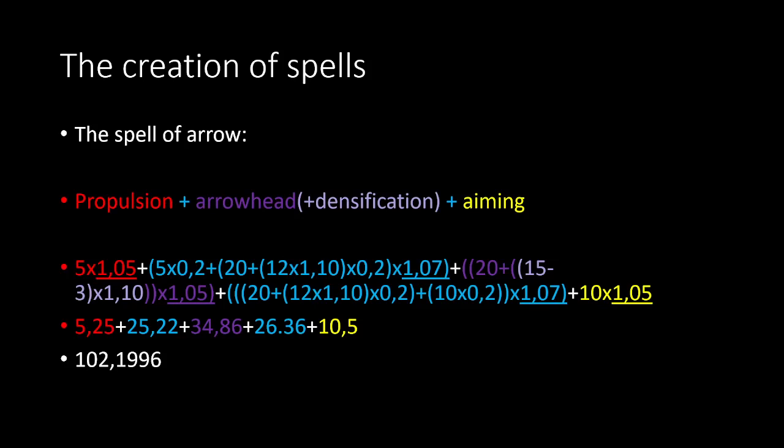After that you have a link. A link is a transition between the two elements and it's very expensive, but also very helpful for the cohesion of the spell. Finally, the aiming—generally not very expensive, 10 points—but very helpful if you want good precision.